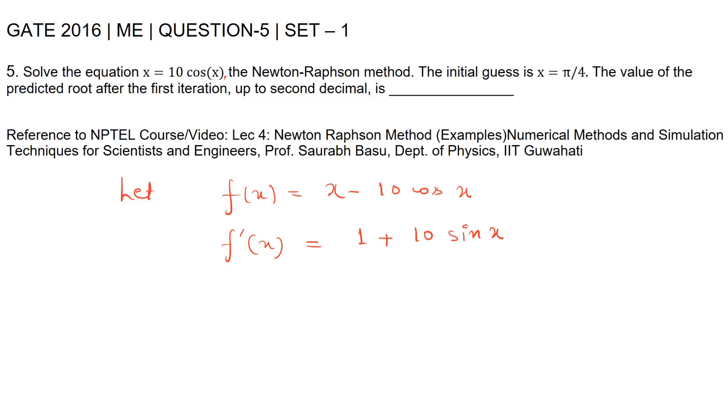Now why are we finding the first derivative? Let's understand that. The iterative process for the Newton-Raphson method to find the approximate root is given by x_{n+1} equals x_n minus f(x_n) upon f′(x_n).